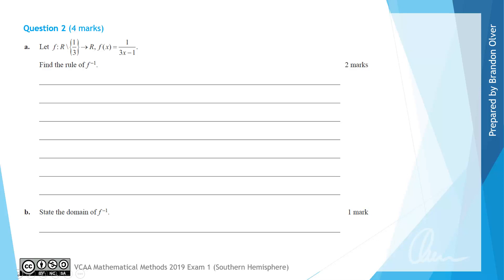For part A of question 2, let f be the function with a domain of the real numbers excluding 1/3, where its rule for f(x) is 1 divided by 3x subtract 1. We are asked to find the rule of f inverse. We don't need to quote the domain, that will come later, just the rule of it.